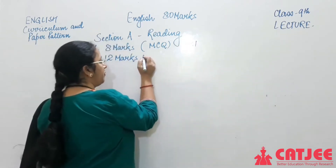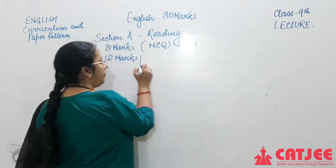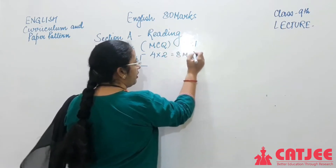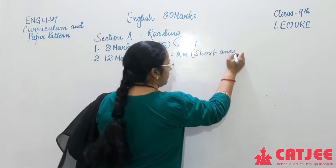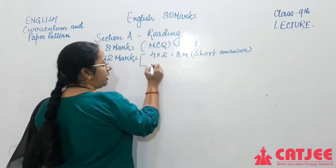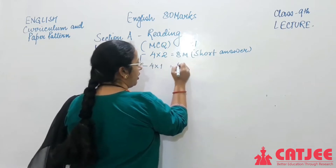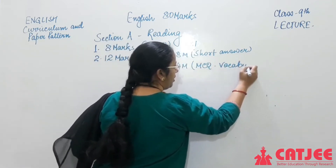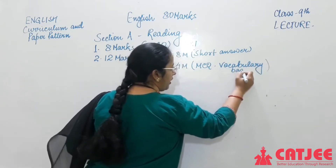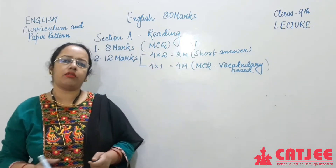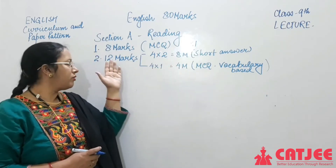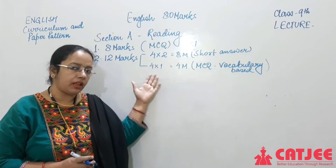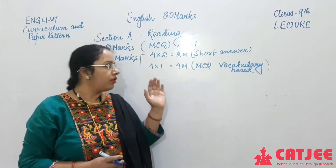The first reading passage is 8 marks with MCQ questions. The second passage is 12 marks — 8 questions of 1 mark each in MCQ format. Within the 12-mark passage, there are 4 questions of 2 marks (short answers, totaling 8 marks) and 4 questions of 1 mark each (MCQ, vocabulary-based, totaling 4 marks). So 8 plus 4 equals 12 marks.